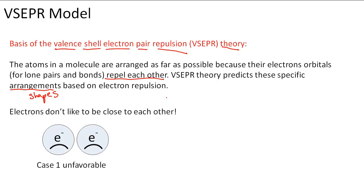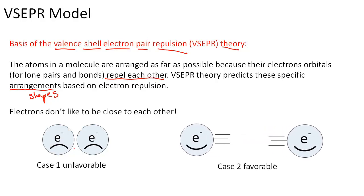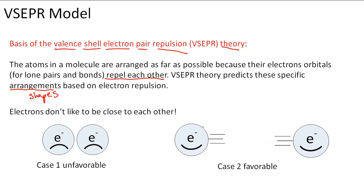Electrons don't like to be close to each other. They have the same charge, so case one is very unfavorable — the electrons are very sad. However, when we have case two, it's favorable because they're moving away from each other. They don't want to be close to each other, so they move away — now they're very happy. So we have a system to predict the shape or arrangement of atoms in a molecule based on electron repulsion.